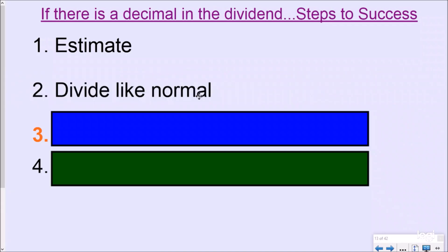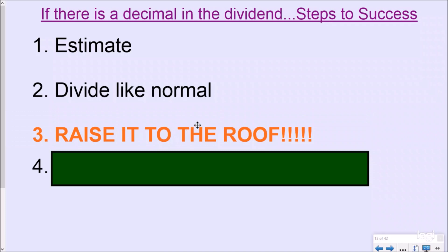Step number two, you're going to divide like normal. So you're just going to divide like it's a whole number. And we'll show you an example of that in a second. And then step number three, you're going to raise that decimal right to the roof. And so it's going to be very important that your place values are lined up, which we will talk about as we go.